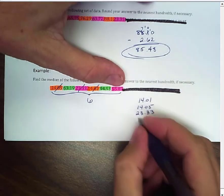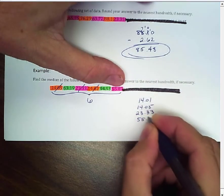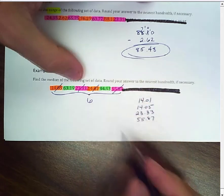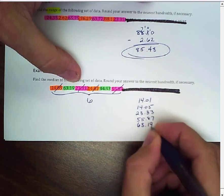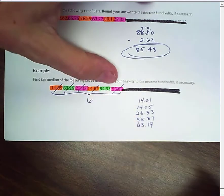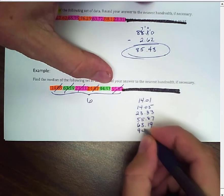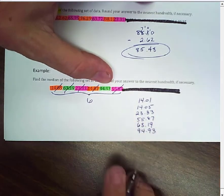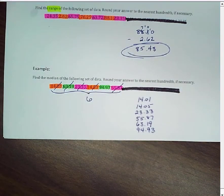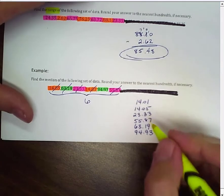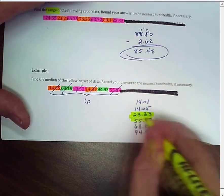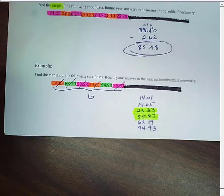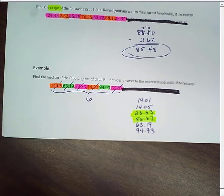Then, it looks like 23.33, and then 55.87. Now, we know we're going to have that middle ground we're going to have to deal with. So, two above, two below. That's going to put my middle right here at 23.33 and 55.87.